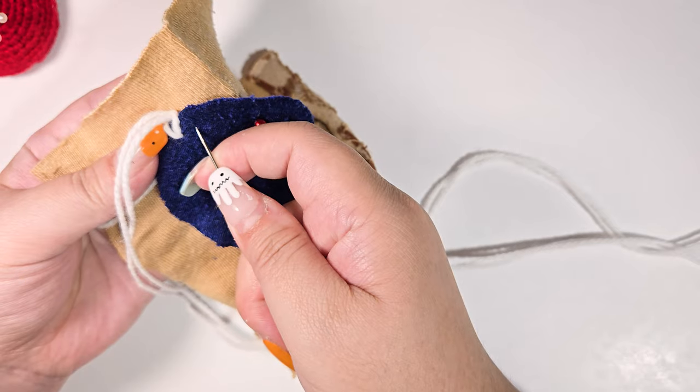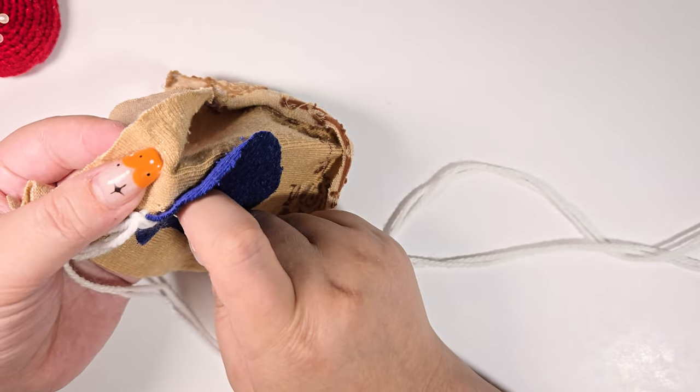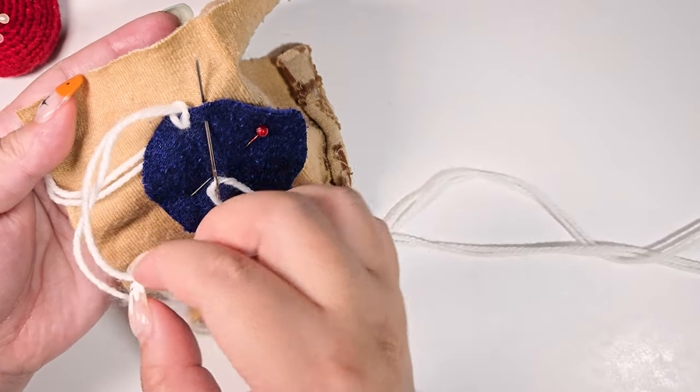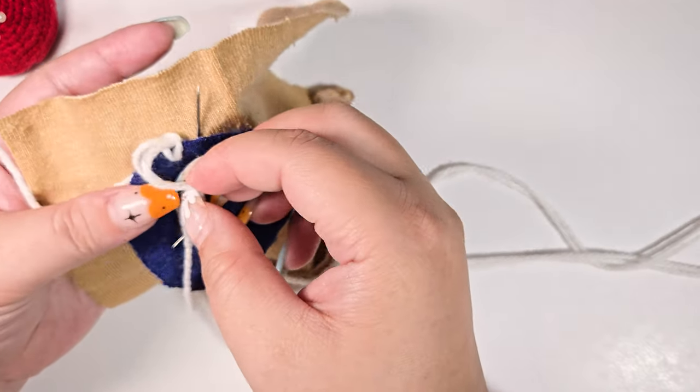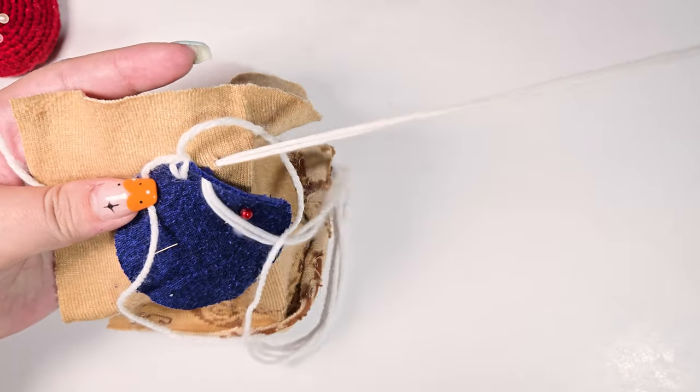Keep going by inserting the needle again through both fabrics and exit diagonally up. Grab one of the threads and loop this around the needle. Pull and that's two stitches done.